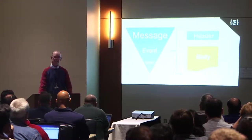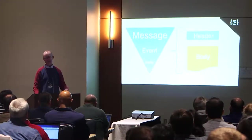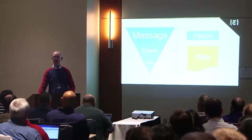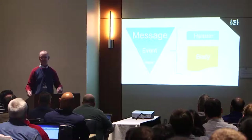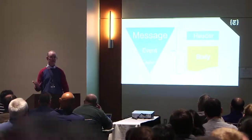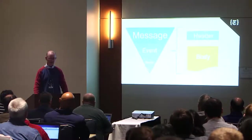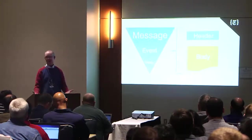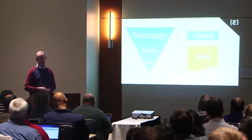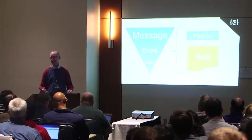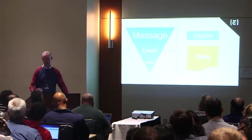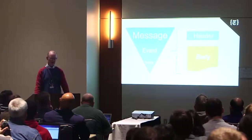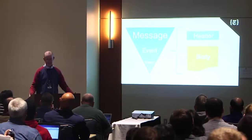Think: message, event, metric. A message is considered a little bulkier; an event is somewhere in the middle; a metric might just carry a single number. They all have a header which might include routing, timestamps, source — that's the metadata about the data. The body is the data that goes with the message, and the object of a messaging system is to push those things around.